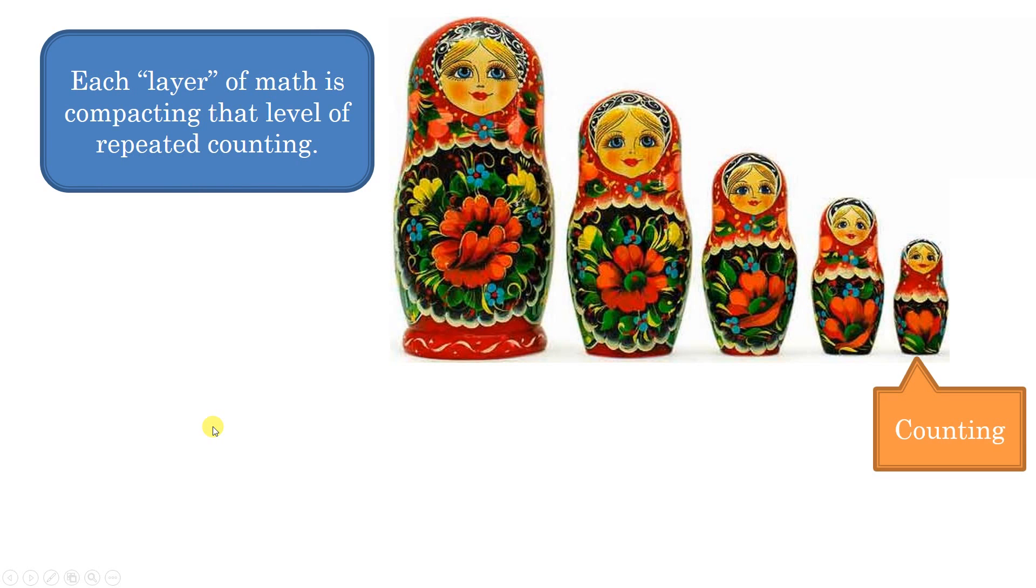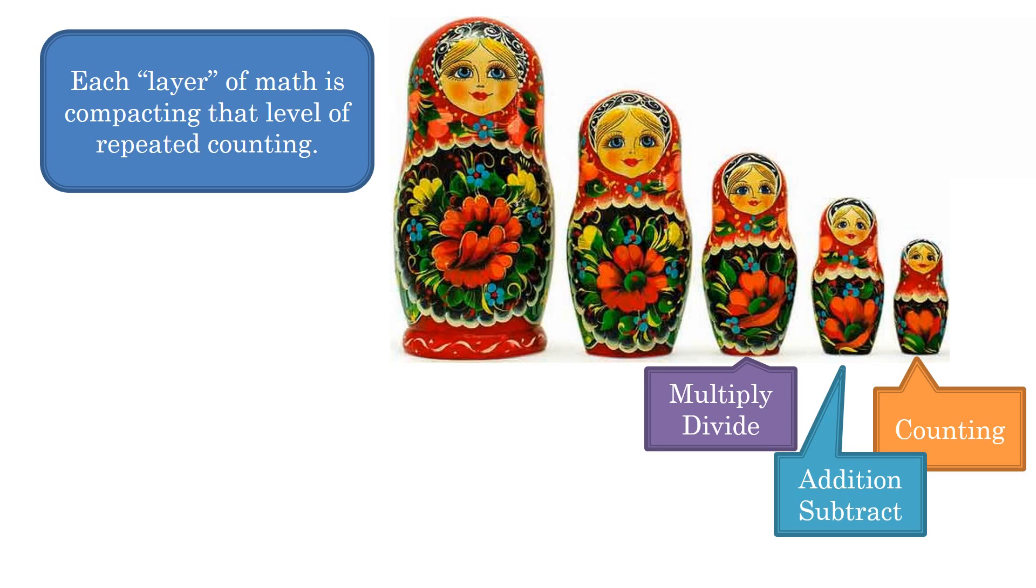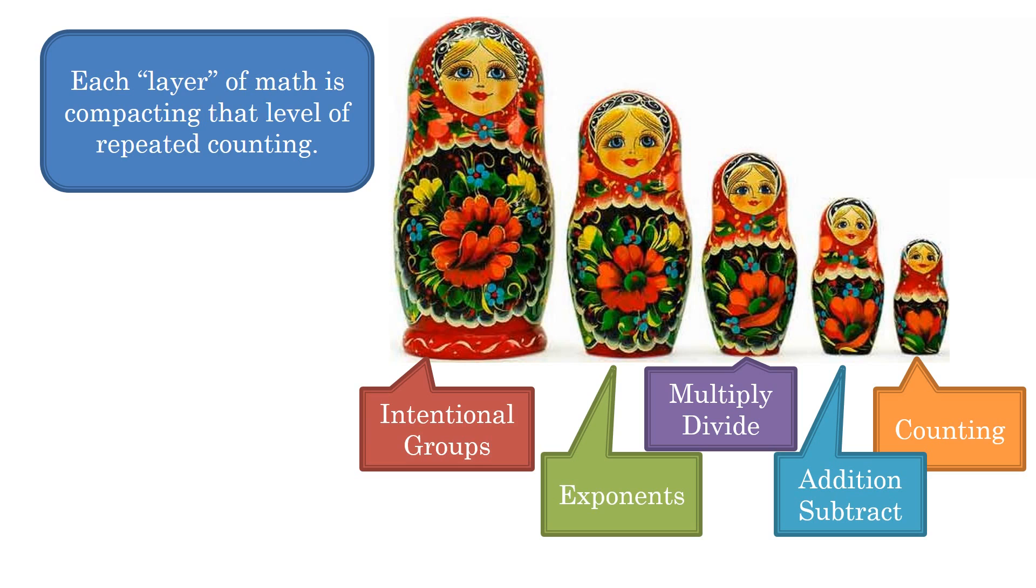So, like these nesting dolls right here, the first one, the smallest, the most simple is counting. And then, housed, that gets housed inside addition. Addition is repeated counting. And then, well, multiplication is repeated addition, and exponents are repeated multiplication. And then we all agree that we can group those things together in ways that we feel has a higher priority than others.